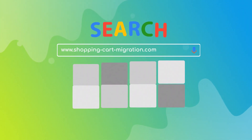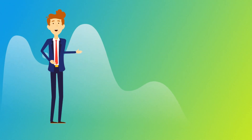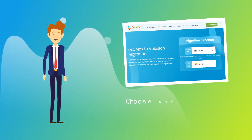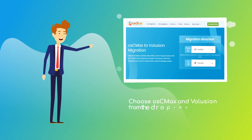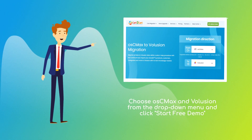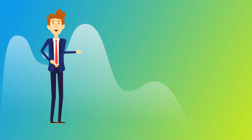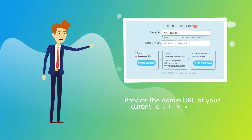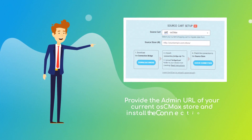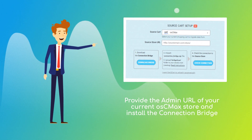To start your migration setup, go to shoppingcartmigration.com. Choose OSC Max and Volusion platforms from the drop-down menu and click Start Free Demo. When done, provide the admin URL of your current OSC Max store and install the connection bridge.